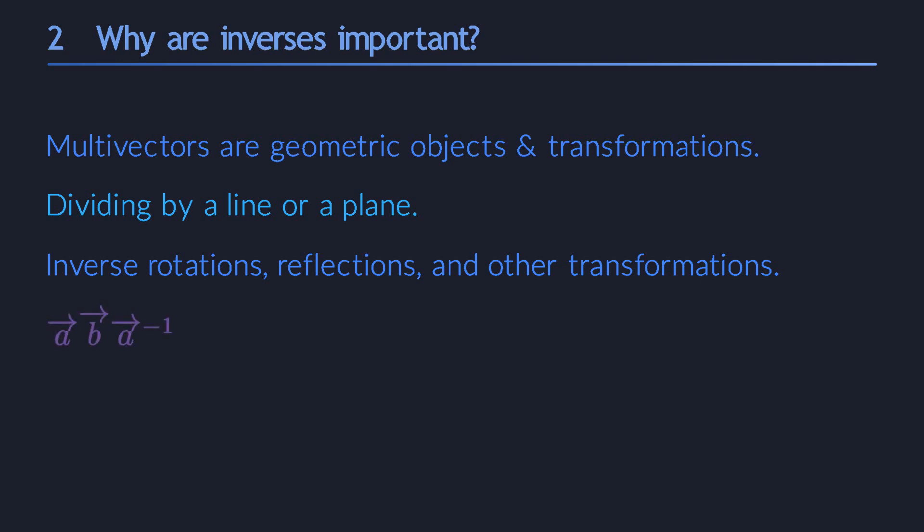But there is another incredibly useful thing that we can do with invertible vectors. We can use them to create sandwich products. In a sandwich product, one of the crusts of the sandwich is always the inverse of the other one. So we really do need inverses in order to construct sandwiches. We will see that they play a central role in geometric algebra. You might even say that the sandwich product is the one concept that brings everything together.